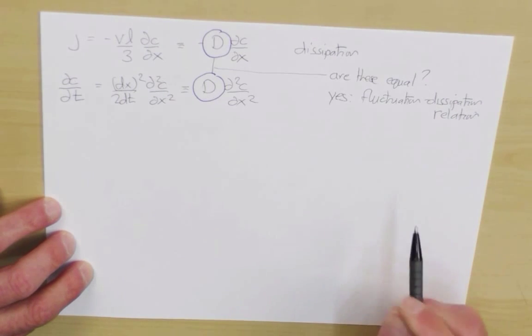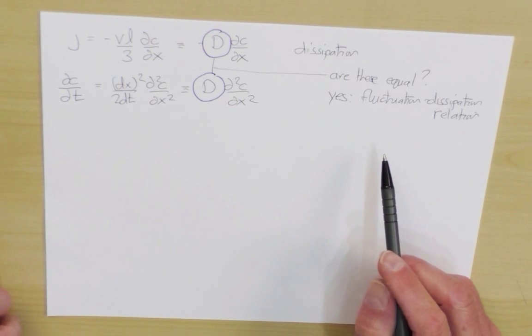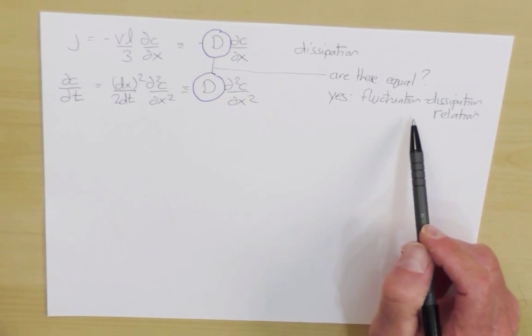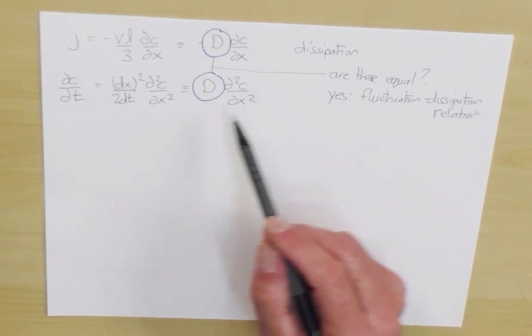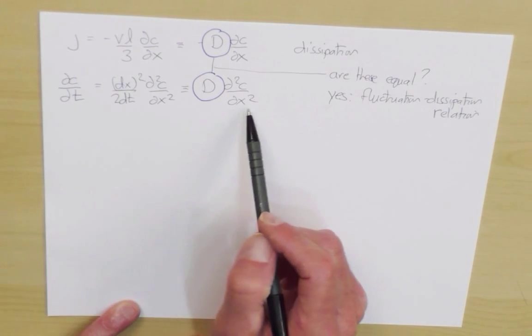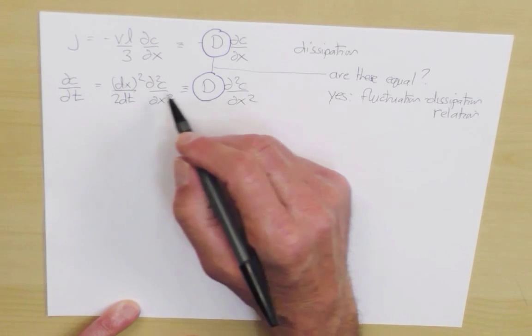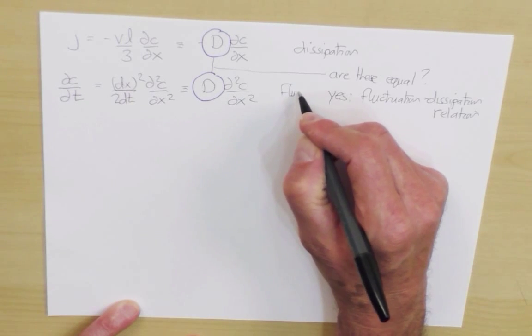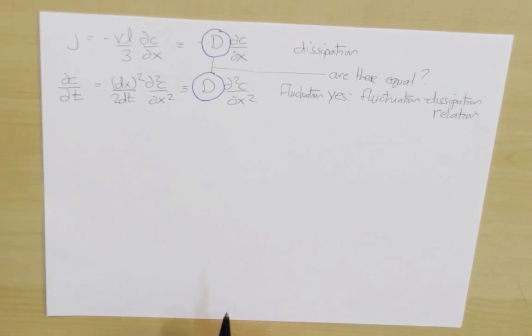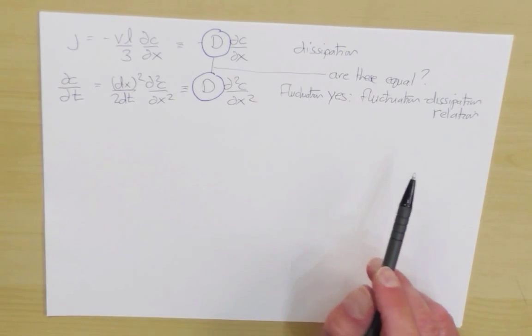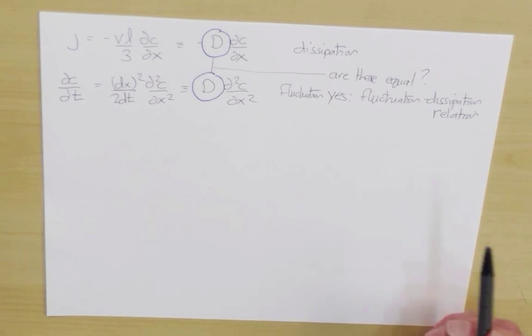Because it relates something that describes the dissipation of a concentration gradient to the random fluctuating motion of a random walk. So this line could be viewed as a fluctuation quantity. The point is that there is a deep relation between dissipation and fluctuation that's embodied by the fluctuation-dissipation relation. Now I can't show this in general but I can kind of wave my hands and give you a feeling for why this ought to occur.